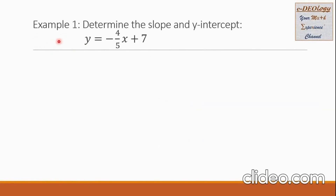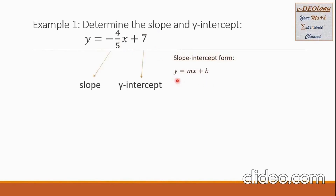Let us have example 1. Determine the slope and y-intercept of this line: y equals negative 4 over 5x plus 7. The slope-intercept form is y equals mx plus b. From the slope-intercept form, we know that the coefficient of x is the slope, while the constant will be the y-intercept. Let us now collect the slope, and that is negative 4 over 5.